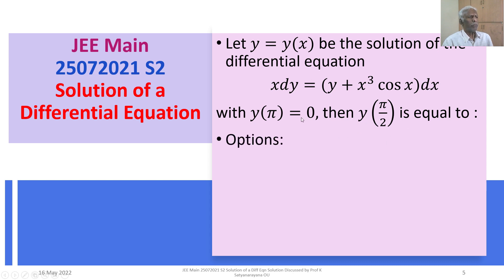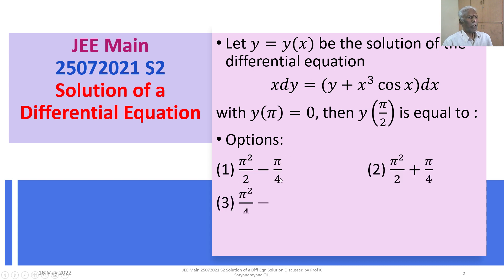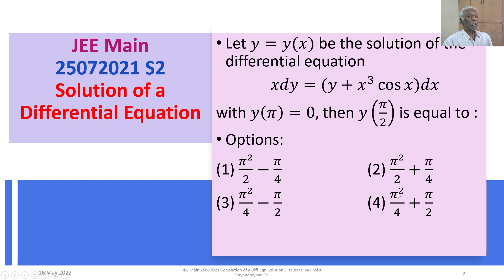The four options are given to us. Option 1: π² by 2 minus π by 4. Option 2: π² by 2 plus π by 4. Option 3: π² by 4 minus π by 2. Option 4: π² by 4 plus π by 2.